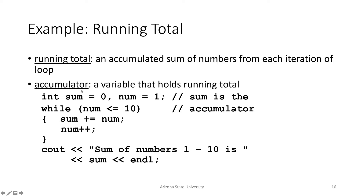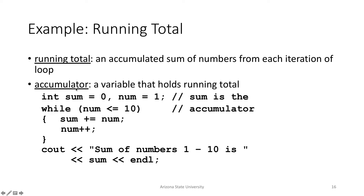An accumulator is a variable that accumulates some value — we start with an initial value and every time through the loop we update it with some new value. The running total is just the accumulated sum, and the accumulator is the variable that holds that value. You don't have to just add the current number; you could update it however you like — for example, adding the remainder of the current number, or adding five every time.